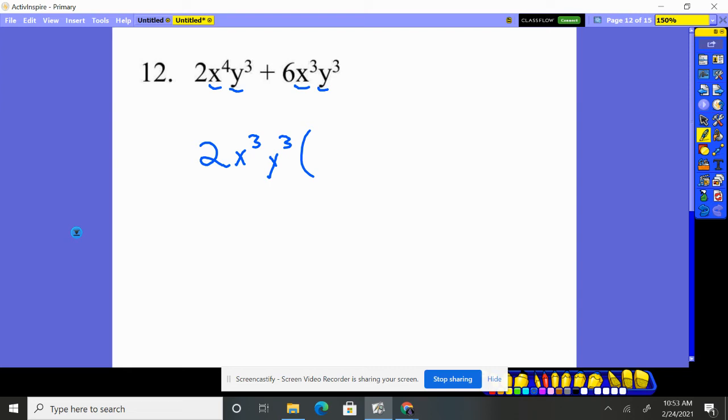So we go back and we say, two X to the third, Y to the third times what gives you two X to the fourth, Y to the third. Well, everything I factored out except for that one X, because remember it was X to the fourth. So you factored out X to the third. So an X was left behind.